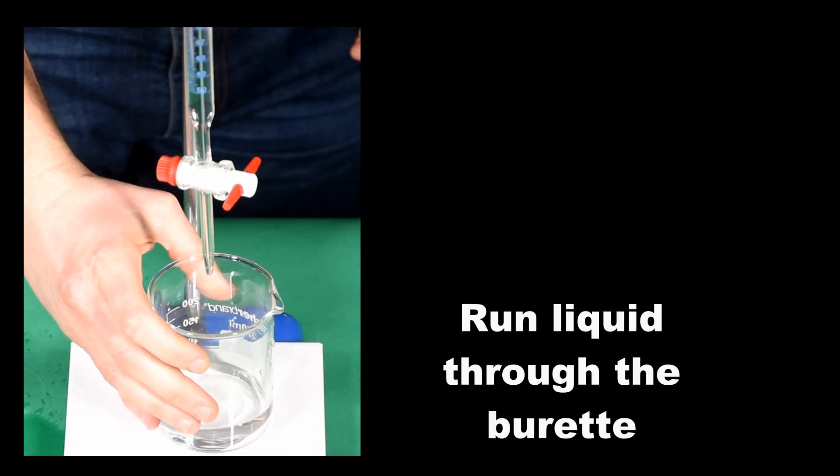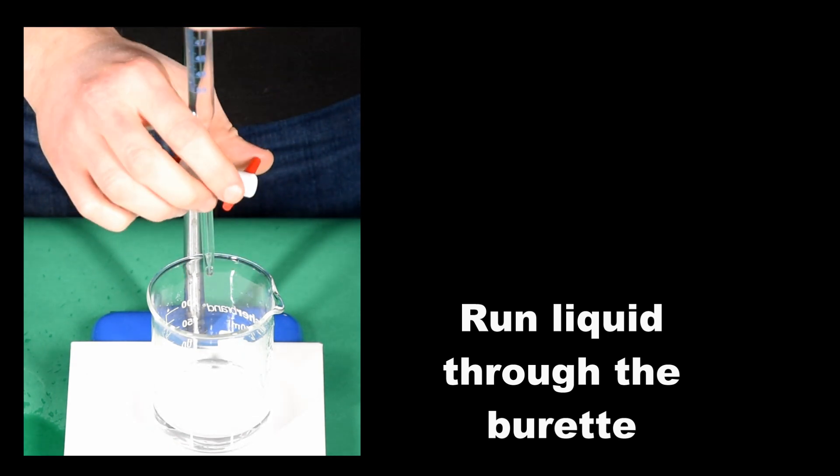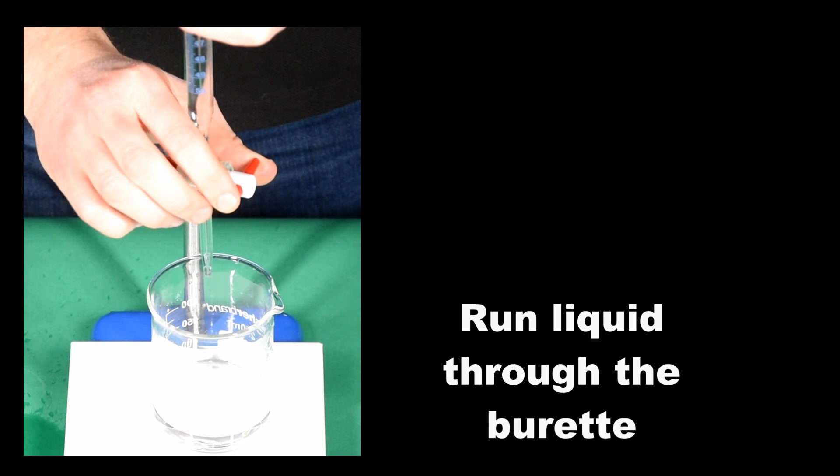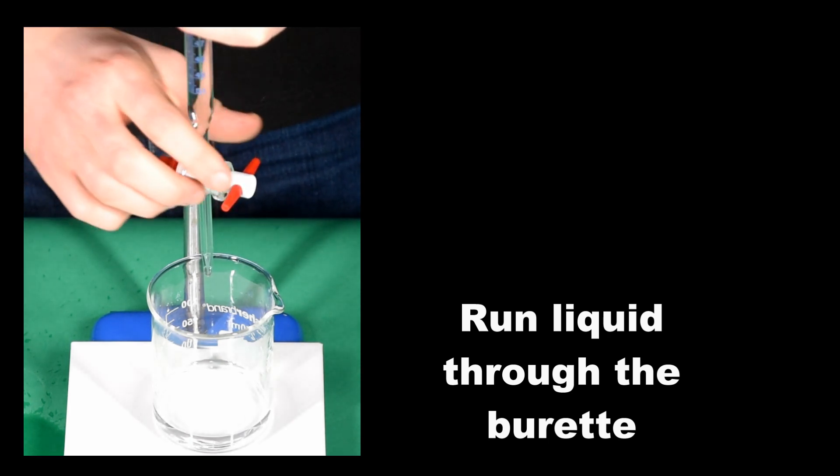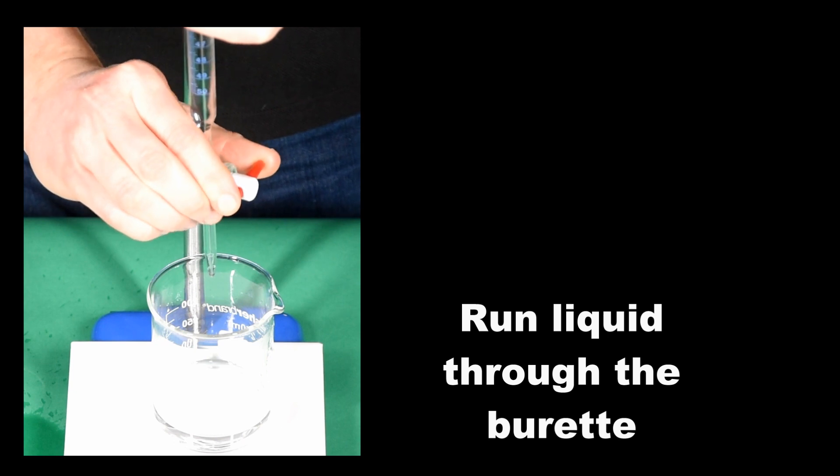Run some liquid through the burette to get rid of any air that may be below the tap. You should now note the level of liquid on the burette's scale. It does not need to start at zero, though this might be slightly more convenient. Discard the runoff acid.